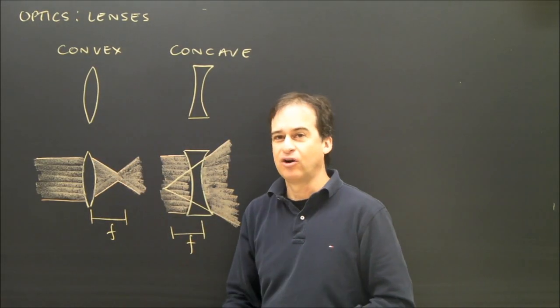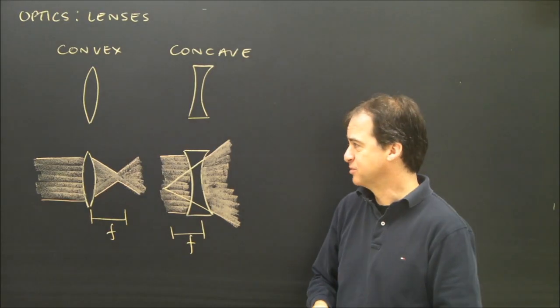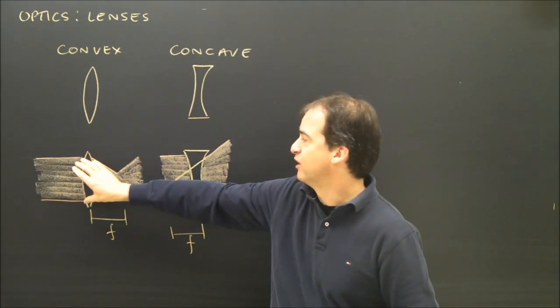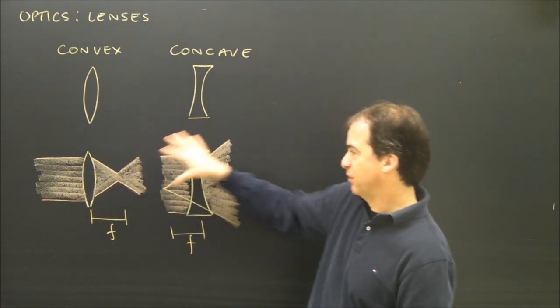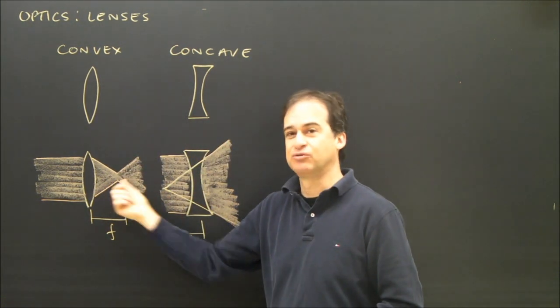Convex lenses, this type, are called converging lenses sometimes. That's because when light travels through the lens, it hits the lens, goes through it, and the light focuses to a point and then spreads back out again. So it converges right here.